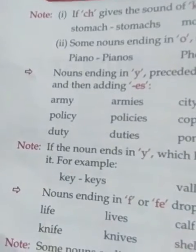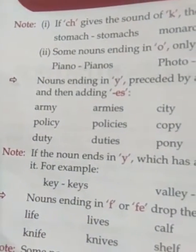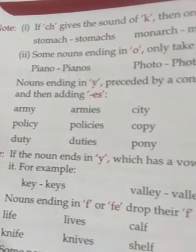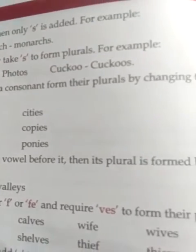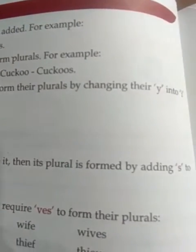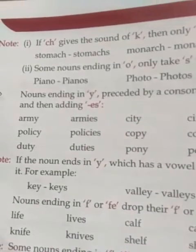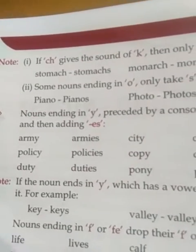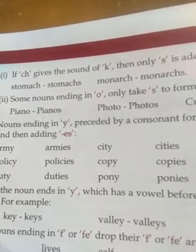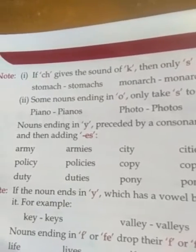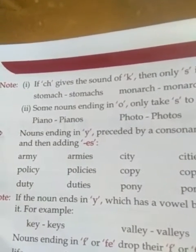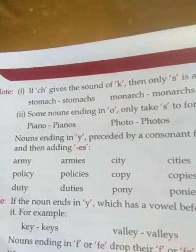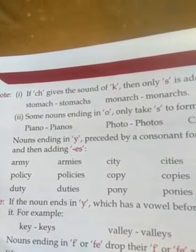Note: If the noun ends in 'y' and there is a vowel before it, then its plural is formed by adding 's' only. For example: key → keys, valley → valleys. You can see that before 'y' there is 'e', which is a vowel, so we add only 's'.